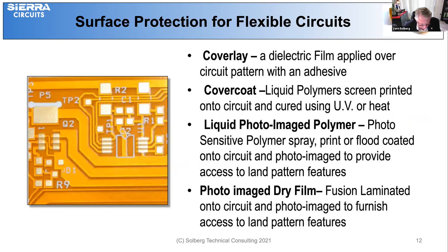After processing the flex circuit, we want to protect the conductors on the surface. Several materials can be used: the cover layer is a dielectric film similar to the base material; there's also a cover coat, which is a liquid polymer screen printed onto the surface and cured using UV or heat; liquid photo image polymers are photosensitive materials that are spray, print, or flood coated onto the surface and go through the development process; and there's the photo image dry film, which is fusion laminated onto the circuit and photo imaged to furnish access to the land pattern features.